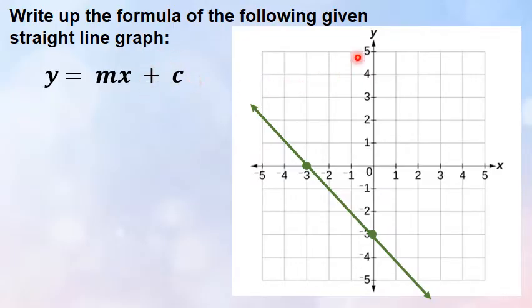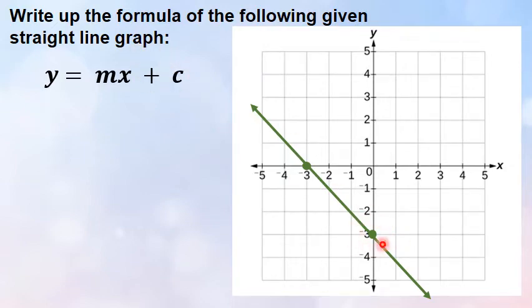If you look at the y-intercept, where it crosses the y-axis is at negative 3. So you can replace that positive c with a negative 3. Now we are left with finding the only other missing value, which is the gradient.